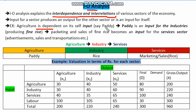For example, agriculture needs some amount of paddy or rice to produce itself. So paddy is an input in itself, and it also produces an output in the form of paddy. Now this paddy becomes an input for the industrial sector. The industrial sector is dependent on the agriculture sector. They take paddy as input and produce fine rice, so fine rice becomes an output of the industrial sector.